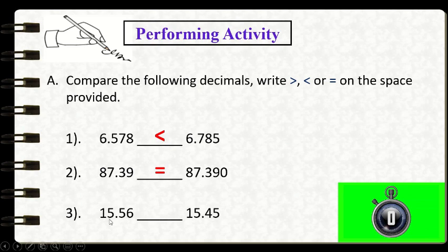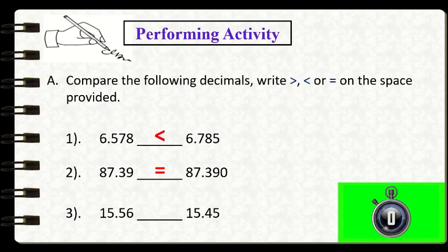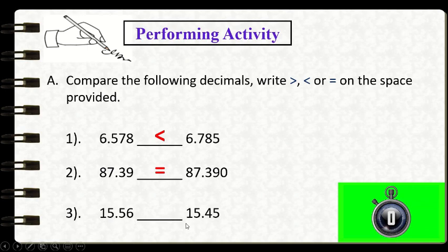For number 3, our given are 15 and 36 hundredths and 15 and 45 hundredths. The leftmost place value is the tens place. We start comparing there — both digits are 1. We move to the ones place — both digits are 5. Since they are equal, we move to the next place value to the right, the tenths place.